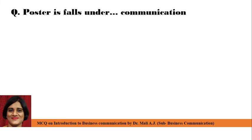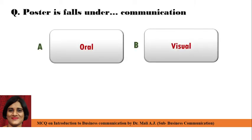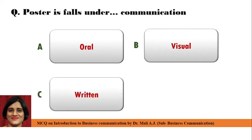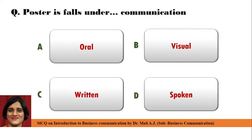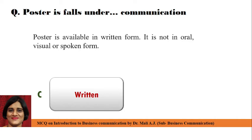Next question: Poster falls under Dash communication. Point A: Oral, Point B: Visual, Point C: Written, Point D: Open. Correct answer is Point C: Written. Poster falls under written communication. Because a poster is available in written form; it is not oral, visual, or spoken. Written communication has the feature of permanent record.